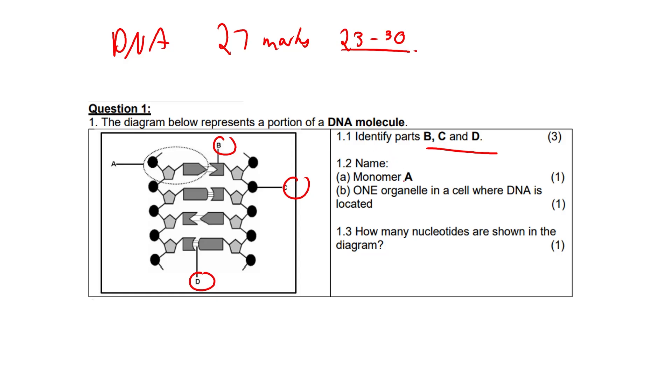Question 1.2, monomer A is a nucleotide, which consists of a phosphate group, a deoxyribose sugar, and a nitrogen base. Name one organelle in a cell where DNA is located. The answer is simply the nucleus, as it houses the cell's genetic material in the form of chromatin or chromosomes.